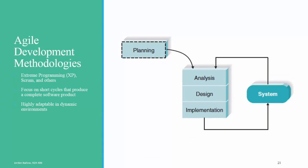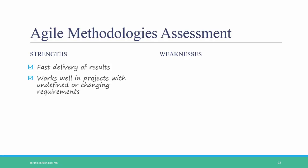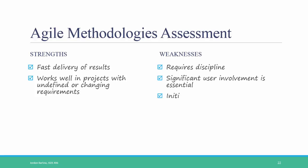Here's an example of what agile development methodologies might look like. The planning box is in dashed lines because little formal planning actually happens in agile development, other than the system request or proposal and designating a project lead. In agile, you just jump in and start in very short phases of analysis, design, and implementation. These phases can even be as little as two to four weeks, so it's very iterative in nature. The strengths of agile development are that you get very fast delivery of results, and it works well in projects that have undefined or changing requirements. However, it requires discipline and significant user involvement. There's also an initial high learning curve involved in agile methodologies, and it works best in smaller projects.